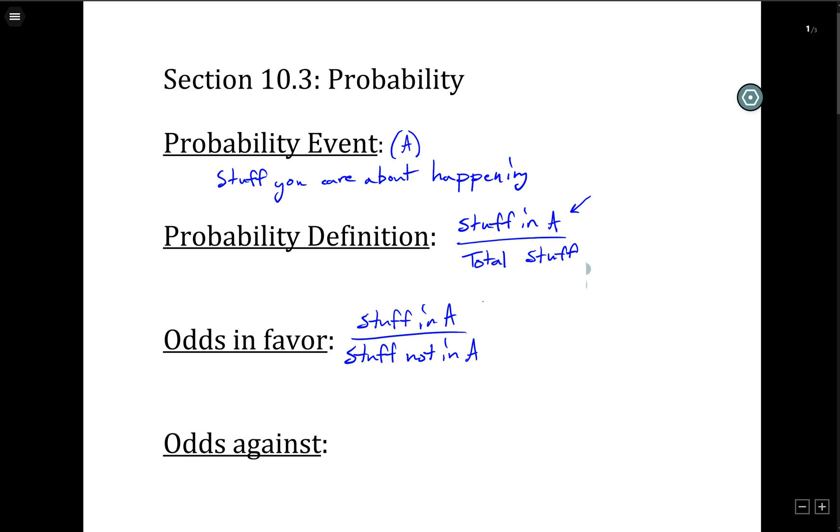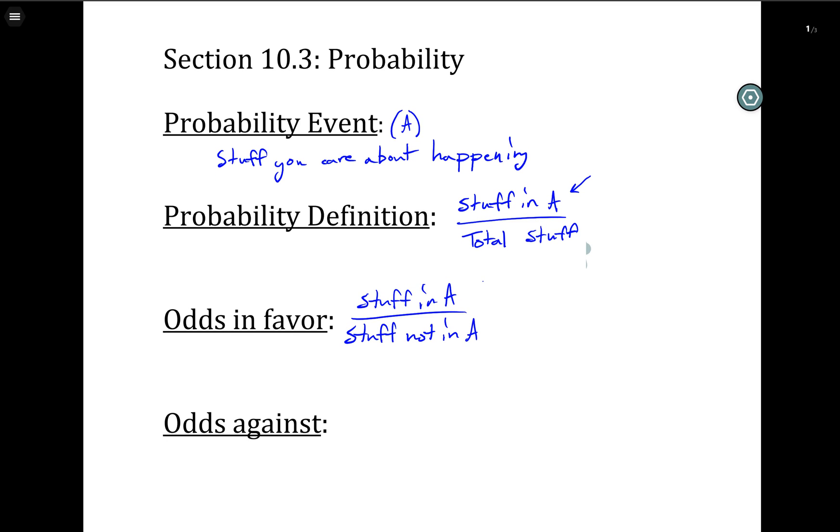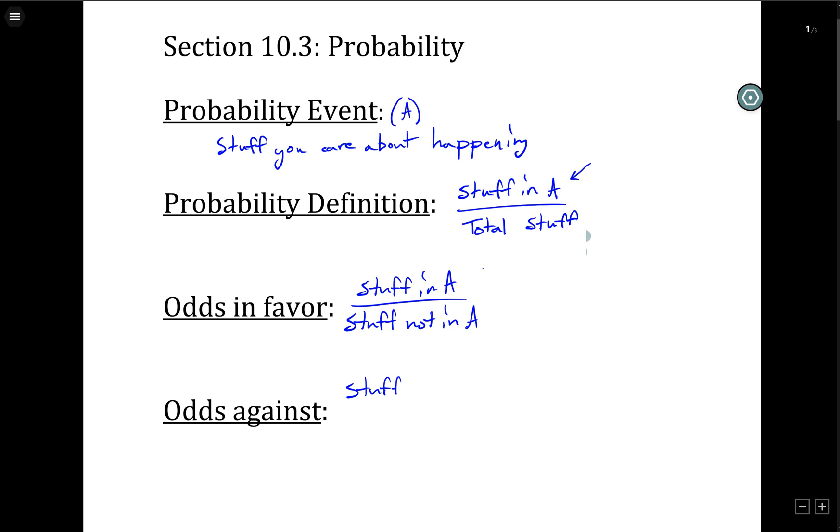And then, oh, I'm recording at home and the call to prayer went off. Anyway, so the odds against, it's just exactly the opposite of odds in favor. So the stuff not in A is on top and the stuff in A is on the bottom. All right, enough definitions. Probably thinking about this in terms of probability event is a little bit confusing. I think even if you were a little confused with these definitions, once we get to the examples, you'll see what's going on.